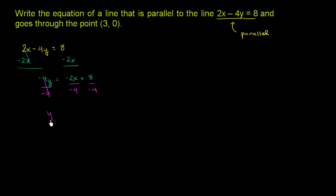So we divide everything by negative 4. And the left-hand side, we just have y equals. Negative 2 divided by negative 4 is 1 half, so y equals 1 half x. And then 8 divided by negative 4 is negative 2, so we could write plus negative 2 or we could just write minus 2.